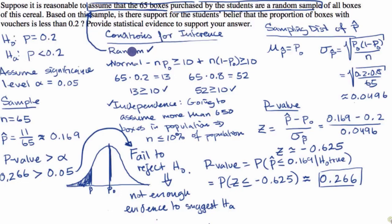Say for the conditions for inference, where we have this random condition here, in the example, I just pointed to the part of the problem where they tell us that we are dealing with a random sample. Assume that the 65 boxes purchased by the students are random samples. I am told that the AP graders do not like this. They do not want you to just point to a part of the passage that says that it's a random sample.